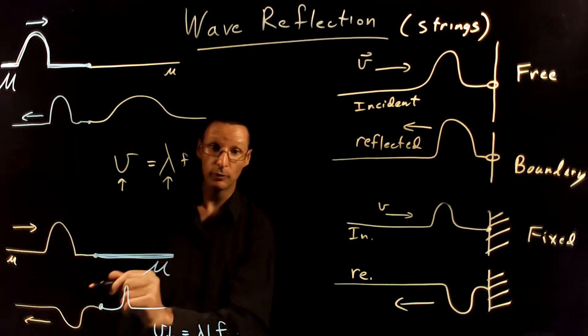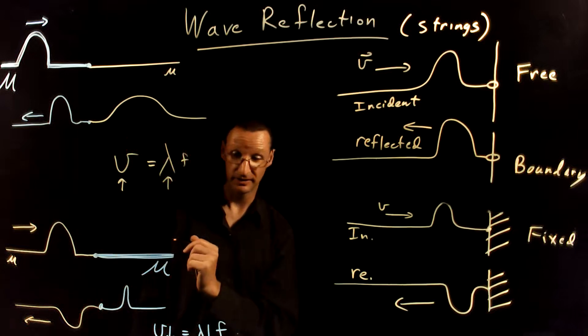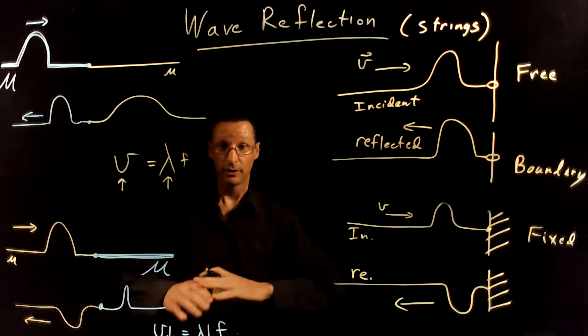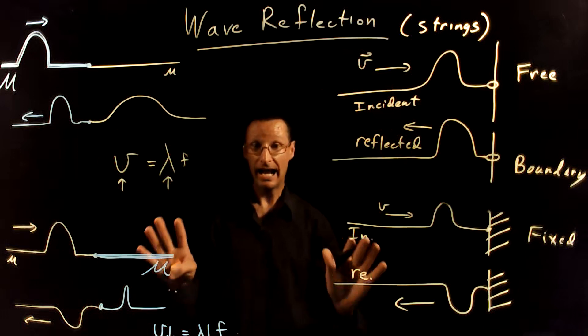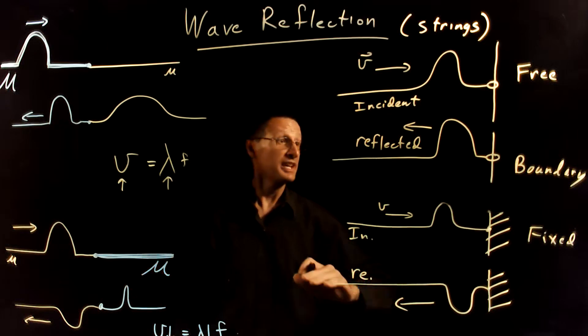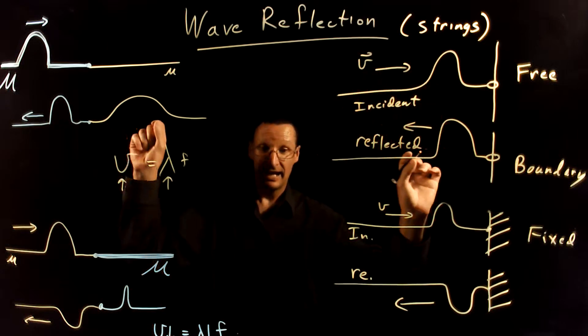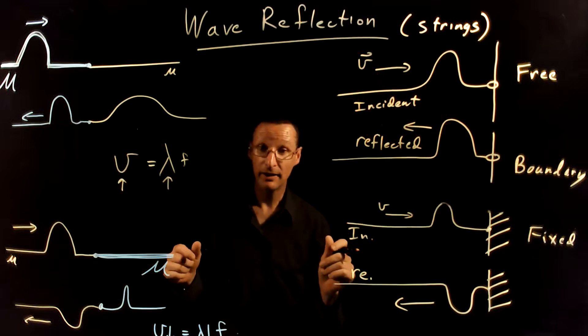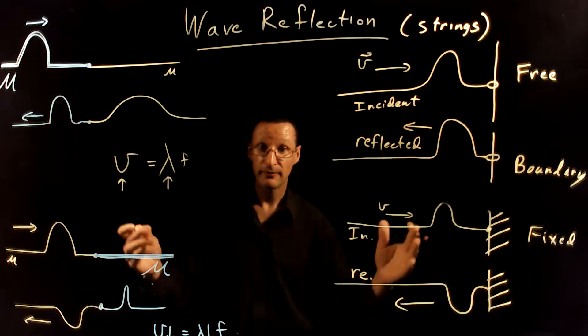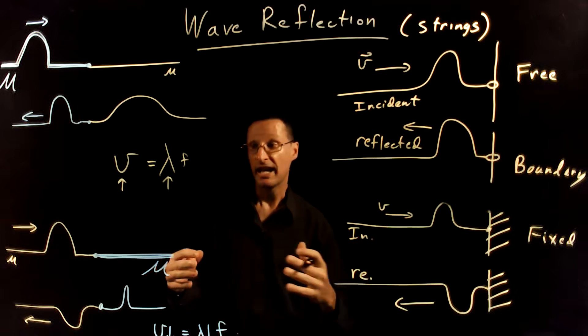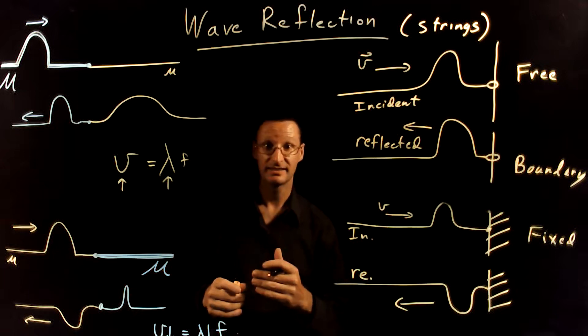So these are some examples of what happens at boundaries. In general, the conditions that occur at the boundaries will dictate what happens with the reflected and incident waves and what changes and what stays the same.